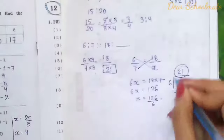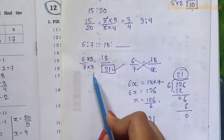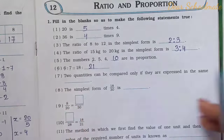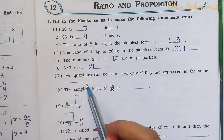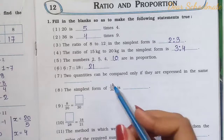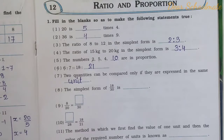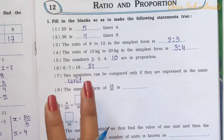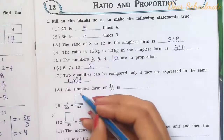Number 7: Two quantities can be compared only if they are expressed in the same unit. If one quantity is in cm and another is in meters, we must convert them to the same unit before finding the ratio. Both quantities must be in the same unit for comparison.